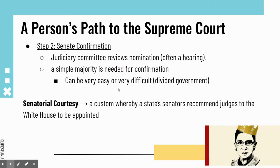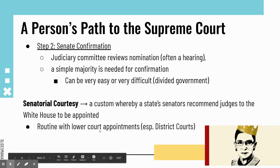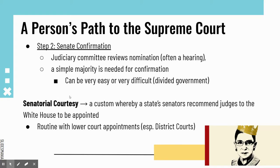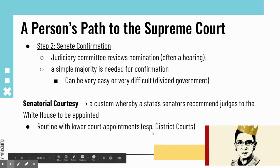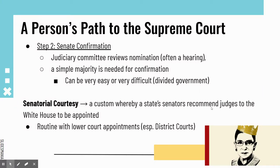The final thing to discuss is senatorial courtesy. This is a custom that usually applies to lower court appointments, especially district courts — it is separate from the Senate confirmation to the Supreme Court. Senatorial courtesy is a custom where, if there's a vacancy on a lower court, state senators from wherever that court is located would recommend a judge to the White House to be appointed. It's a courtesy to go through the Senate first to see who they would like in the district or circuit courts of appeal, and the president takes that into mind when making those lower court appointments.